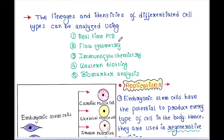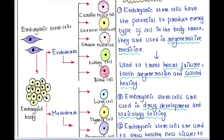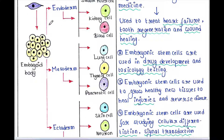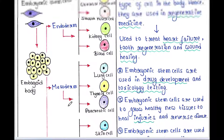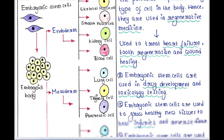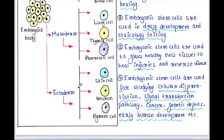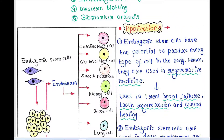The lineages and identities of differentiated cell types can be analyzed using real-time PCR, flow cytometry, immunocytochemistry, western blotting, biomarker analysis, and more. Here you can see embryonic stem cells allowed to form an embryo body, from which endoderm, mesoderm, and ectoderm form. Endoderm generates cardiac muscle cells, skeletal muscle cells, smooth muscle cells, kidney cells, and blood cells. Mesoderm differentiates into lung cells, thyroid cells, and pancreatic cells. Ectoderm differentiates into skin cells, neurons, and pigment cells.